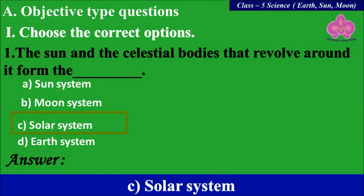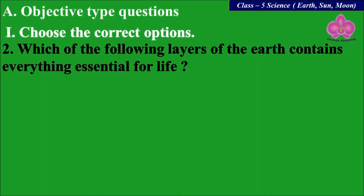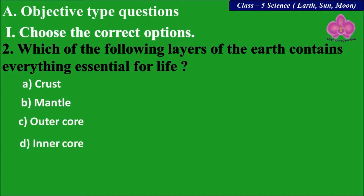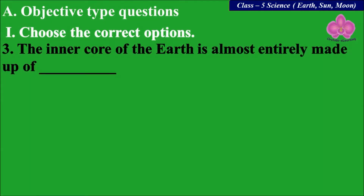Next: which of the following layers of Earth contains everything essential for life? A: Crust, B: Mantle, C: Outer core, D: Inner core. The answer is A, Crust.